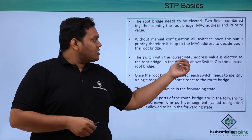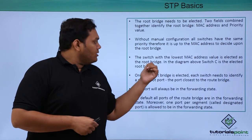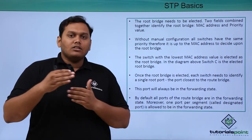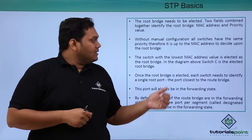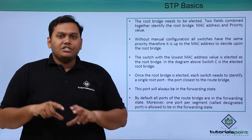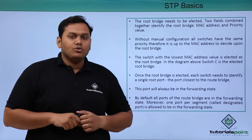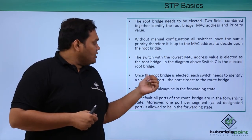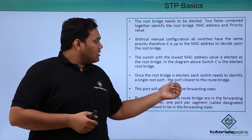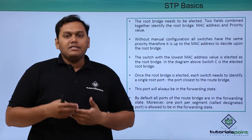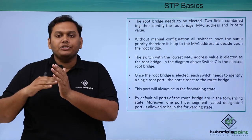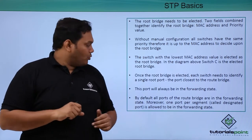In the diagram we discussed, switch C has the lowest MAC address, so it is elected as the root bridge. Once the root bridge is elected, each switch needs to identify its single root port — the port closest to the root bridge.